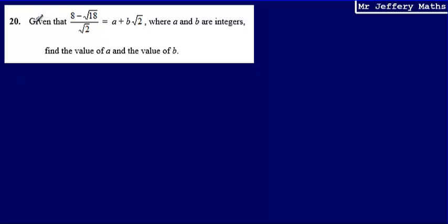This is question 20. Here we're given that 8 minus root 18 divided by root 2 is equal to a plus b root 2, where a and b are integers. Find the value of a and the value of b.